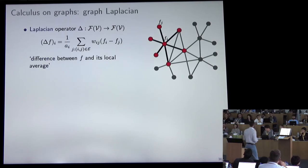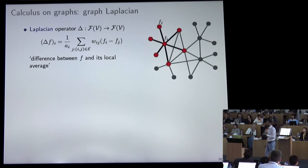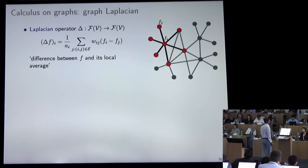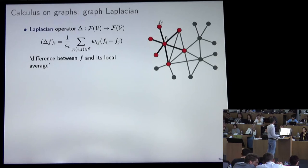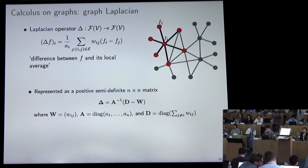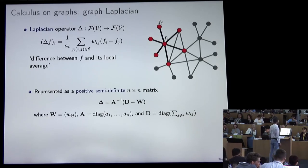The Laplacian is defined as the divergence of the gradient — an operator that takes vertex fields and produces vertex fields. It performs a weighted average of neighbors and subtracts it from the value at the vertex. You can write the Laplacian as an N×N matrix — usually sparse, encoding the graph connectivity. Matrix W contains the edge weights, A is a diagonal matrix of vertex weights, and D is the diagonal degree matrix.